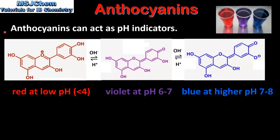Next we look at the use of anthocyanins as pH indicators. Here we can see the colours of an anthocyanin, which is cyanidin, at different pH values. Cyanidin is red at low pH — that's a pH less than 4 — violet at pH 6 to 7, and blue at higher pH, for example 7 to 8.